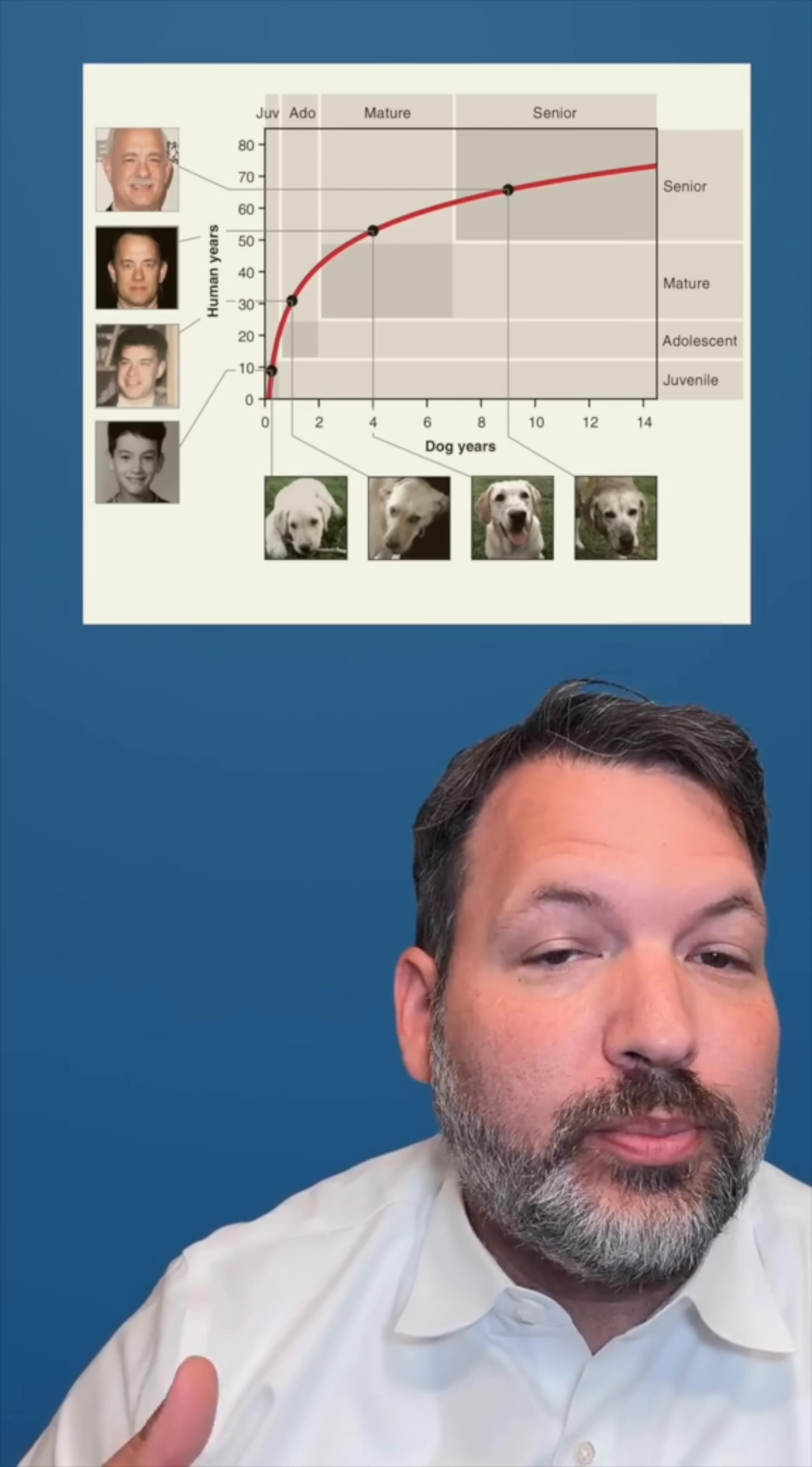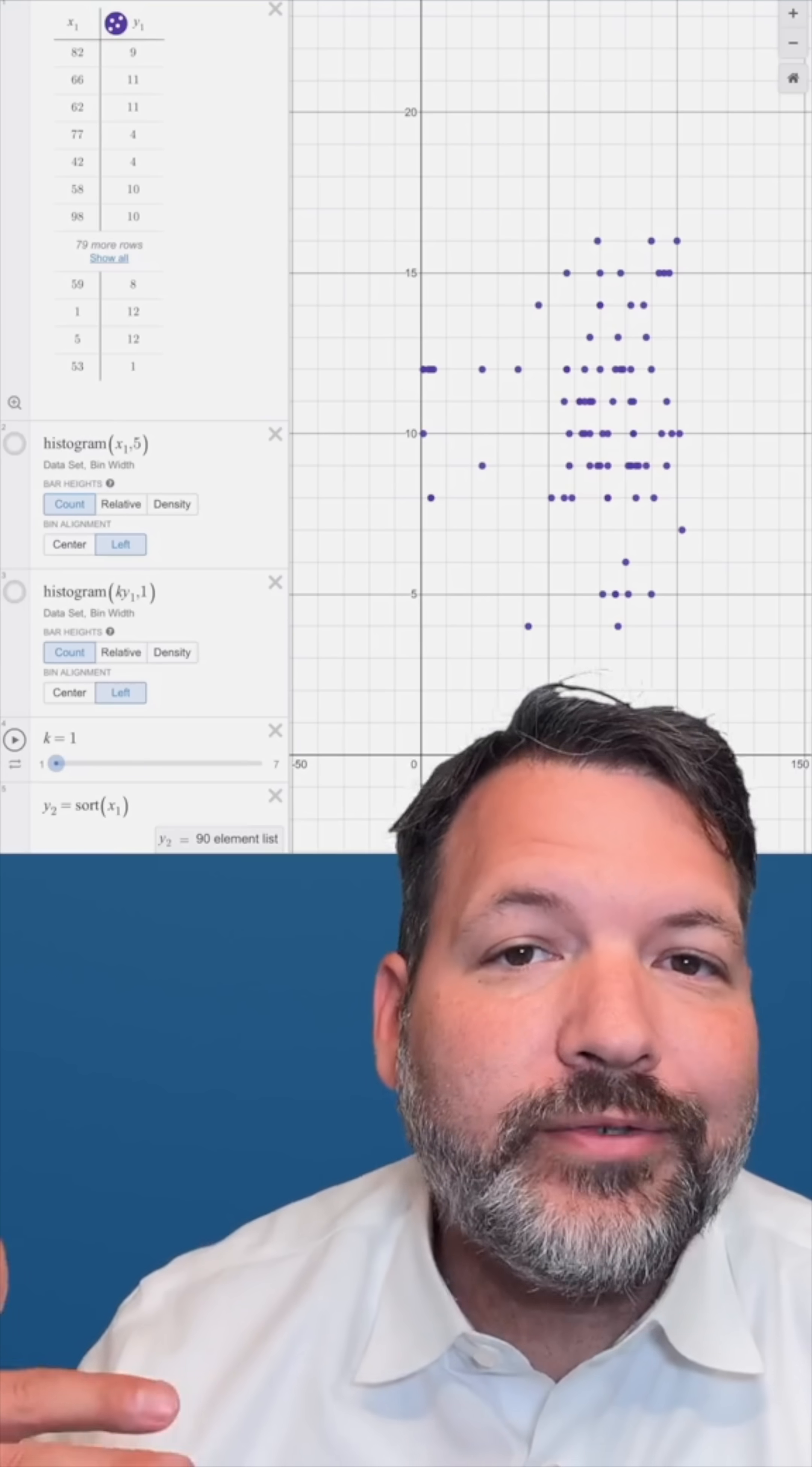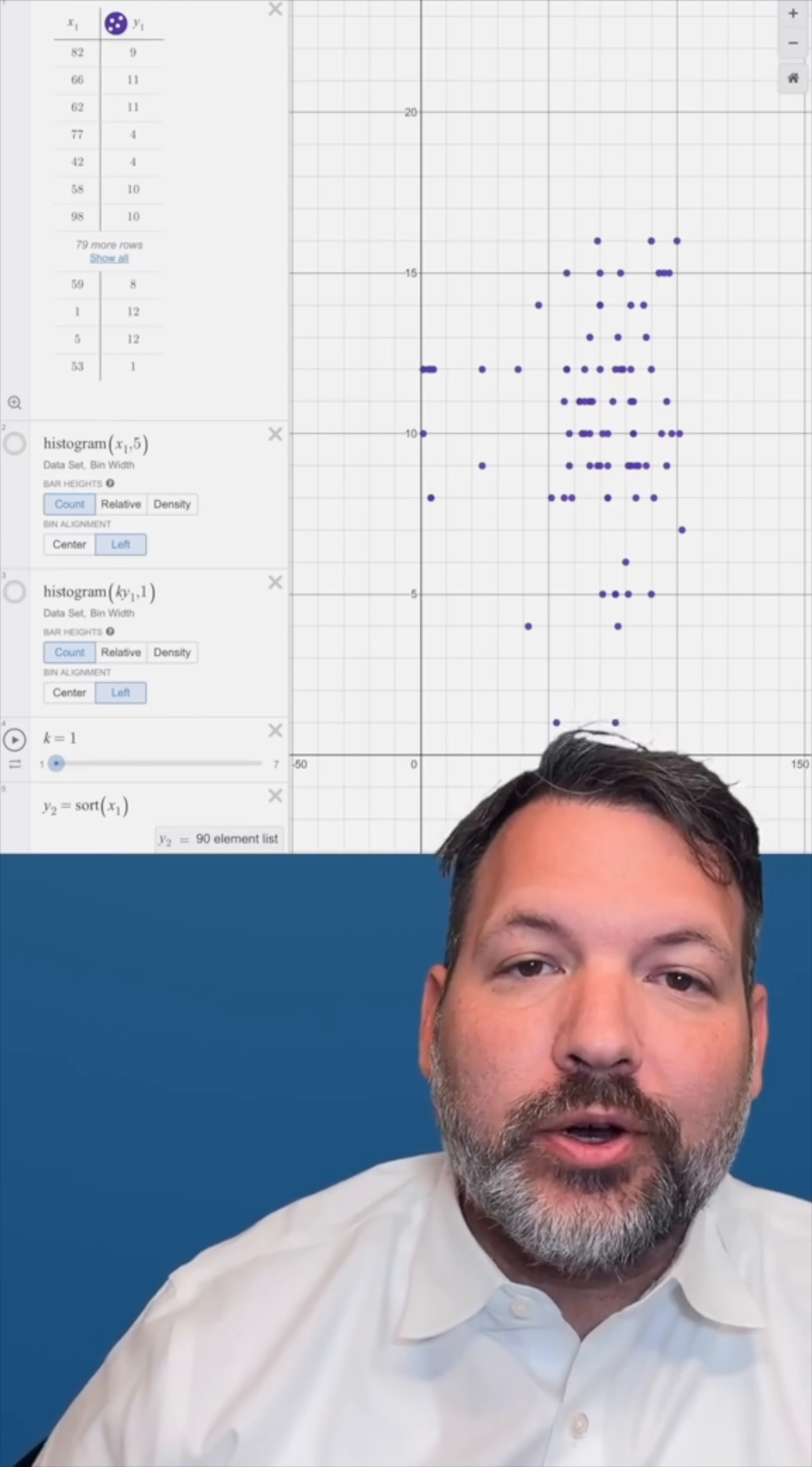That is, you take your dog's age, multiply by seven, and that gives you back some kind of human years age. It's easy enough to imagine where this initial linear rule came from.